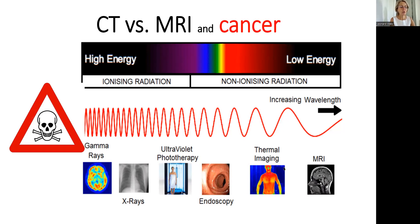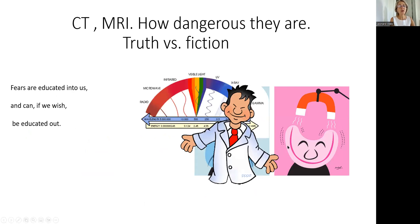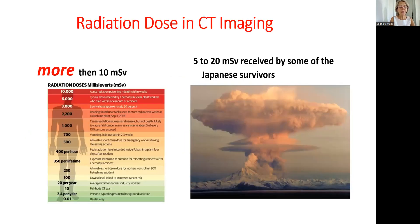Now, let's talk more about MRI — the only reason it doesn't create that much effect is because it's non-ionizing radiation; it's basically a huge magnetic field. Now let's start talking about CT imaging. Here on the left, you can see how much radiation a person gets from different devices. The lowest radiation comes from a dental x-ray, and during a full body scan, a person gets about 10 mSv of radiation.